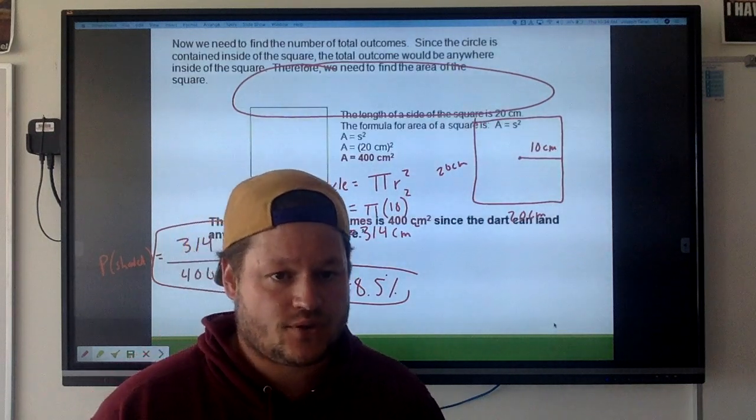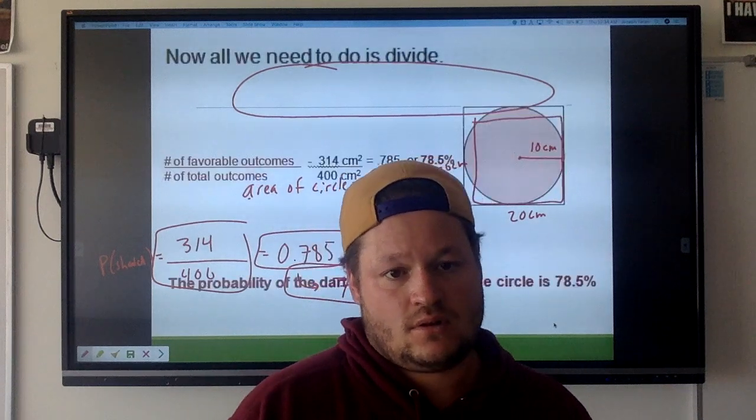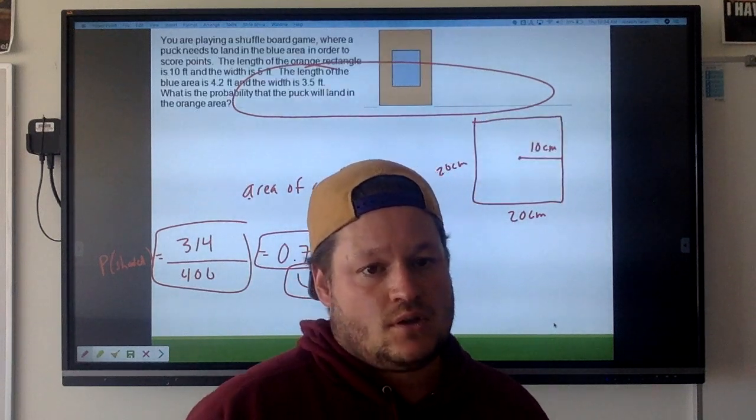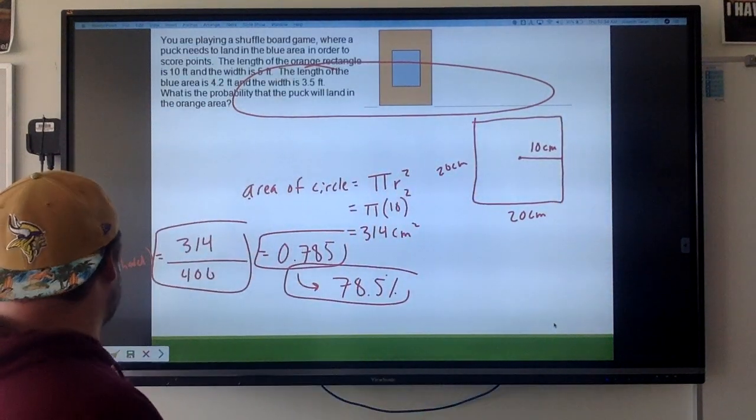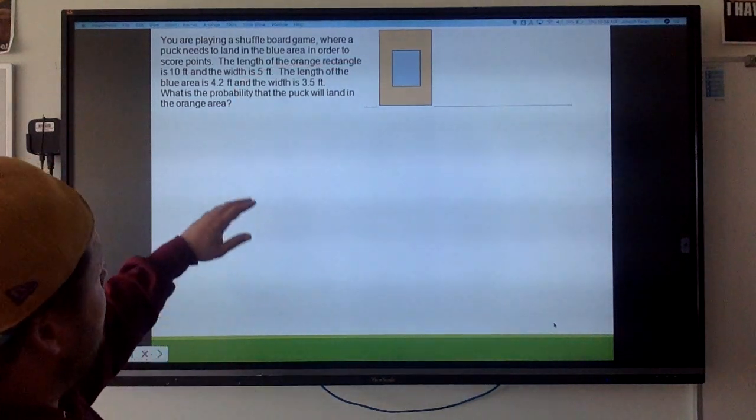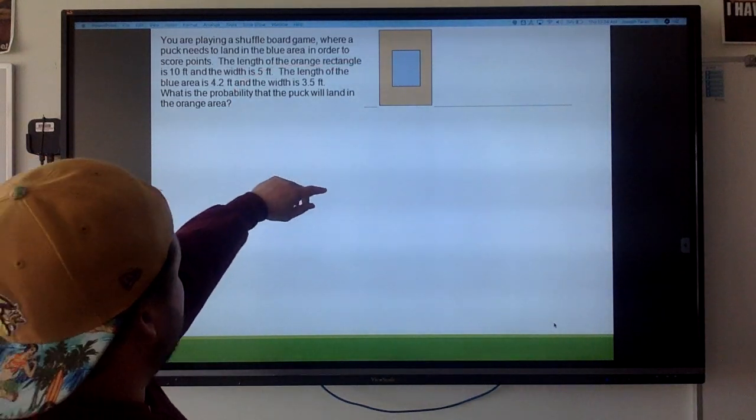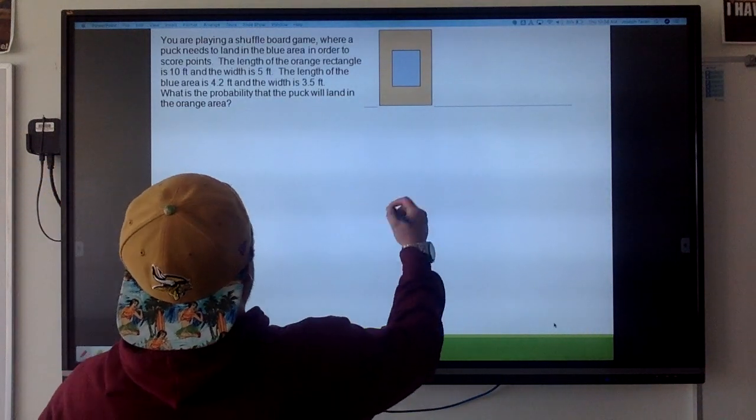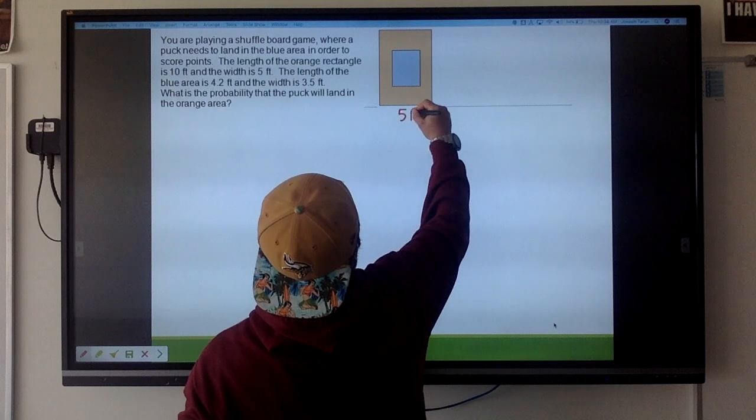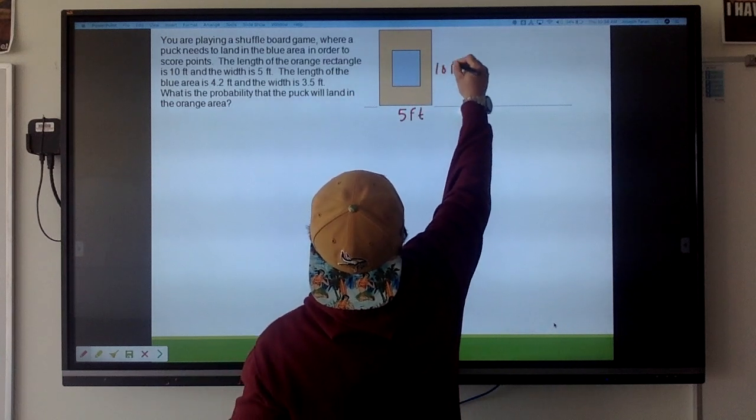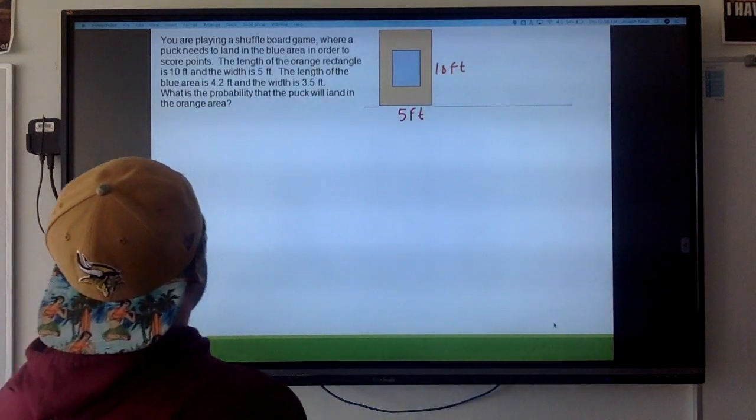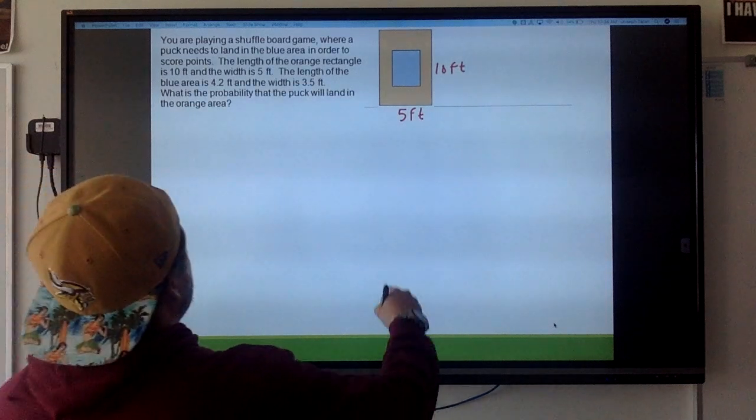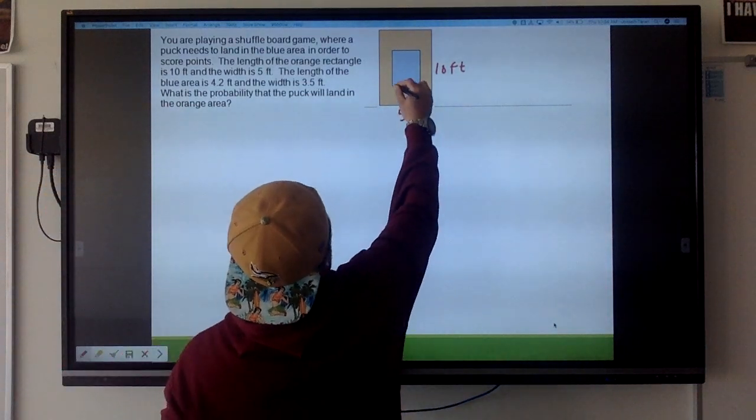I think we got a harder example here. This is all the stuff that I just went through. So here we go, this one's a little bit more confusing. The puck needs to land in the blue area in order to score points. The length of the orange rectangle is 10 feet, the width is 5. So 5 feet, 10 feet. The length of the blue area is 4.2, the width is 3.5.